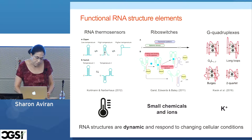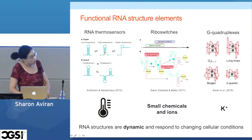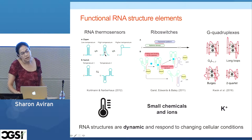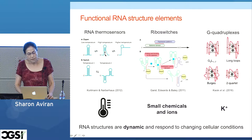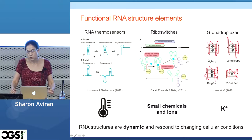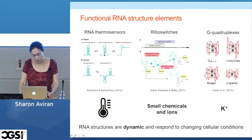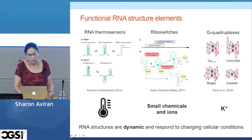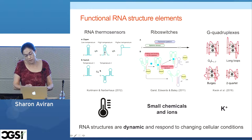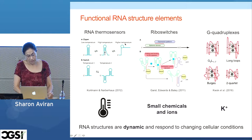The first group is called RNA thermosensors. These are common in bacteria and they change their structure in response to changes in temperature. The most obvious change is to open up the structure when temperature goes higher, but the RNA structure can sometimes also fold into a different structure. So you can end up with either something open or something different.